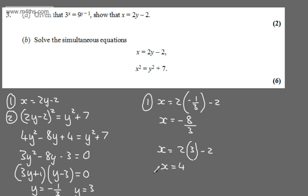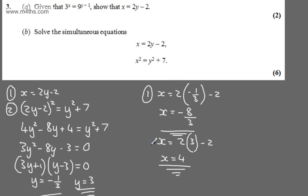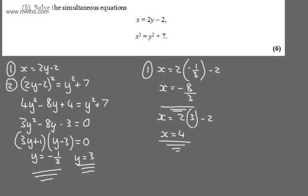So here are our solutions. We've got now y is minus 1 third, and we've got y is equal to 3. We've got x is equal to minus 8 thirds, and we've got x is equal to 4. Lots of different approaches to this particular equation in terms of which you sub in, but at the end of the day, these are the solutions that you should have.